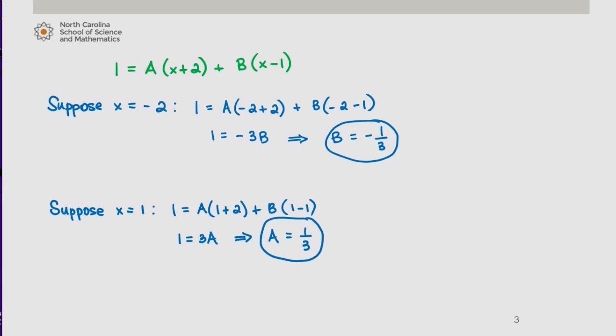So we have now found that 1 over x squared plus x minus 2 is equal to 1 third over x minus 1 minus 1 third over x plus 2.